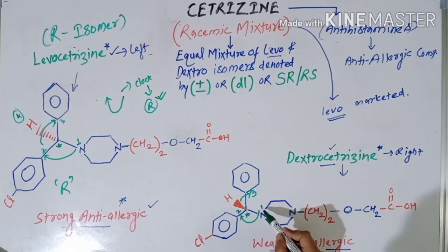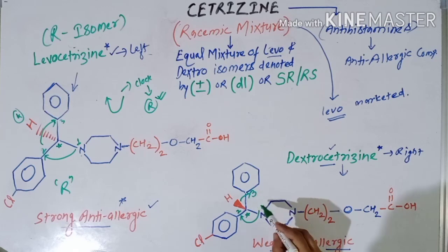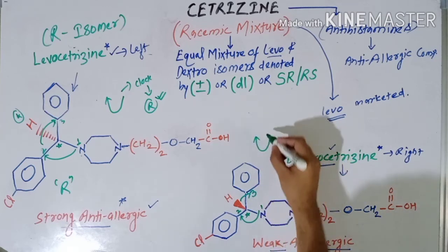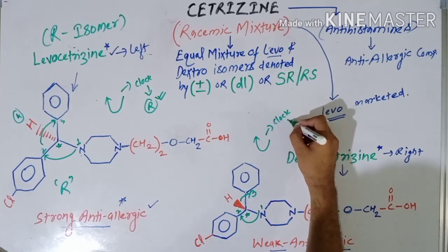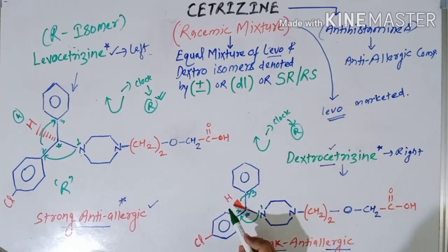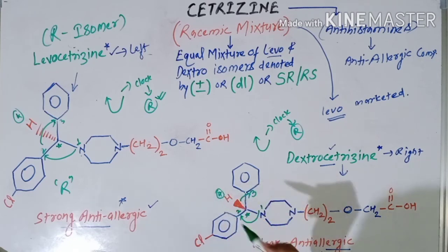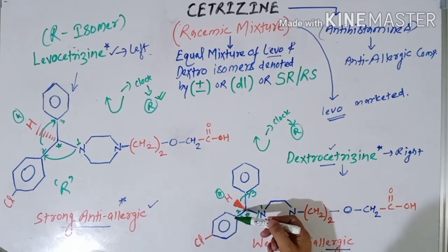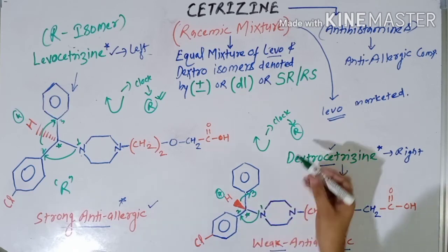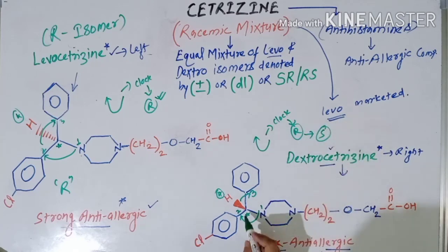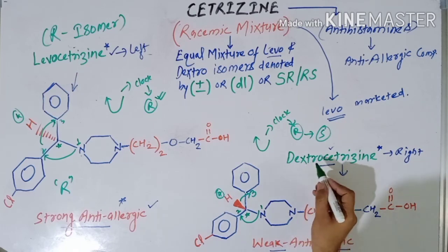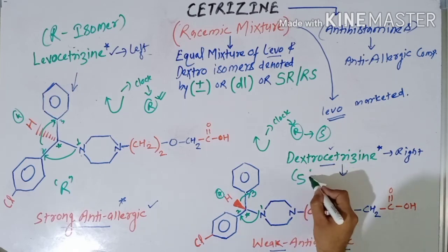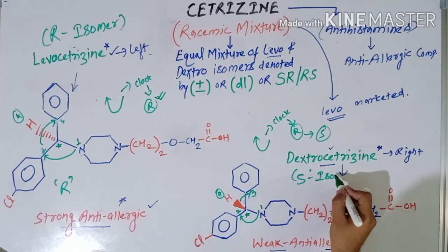For dextrocetirizine, the same carbon is connected to the same groups: first priority to nitrogen, second to the chlorophenyl carbon, third to the phenyl carbon. The arrow again moves clockwise, suggesting R configuration. However, the lowest priority group — hydrogen — is placed above the plane. As established in previous classes, if the lowest priority group is above the plane, the configuration changes from R to S. Therefore, dextrocetirizine has the S configuration.